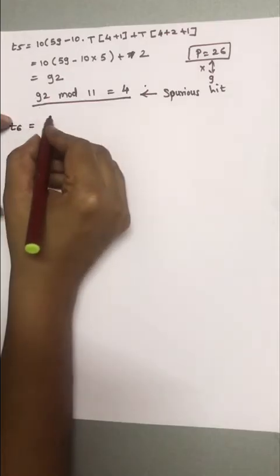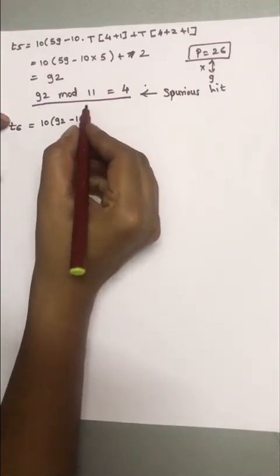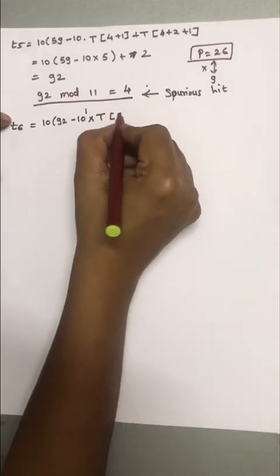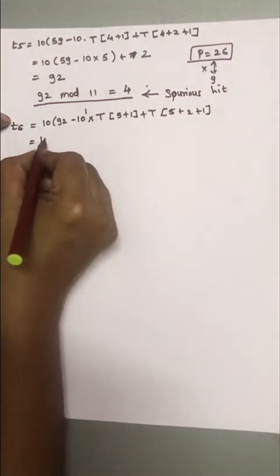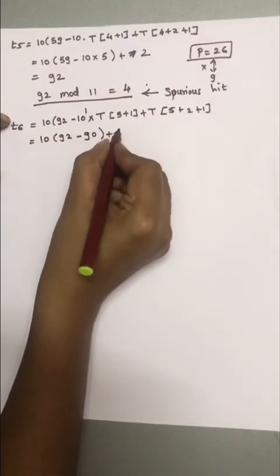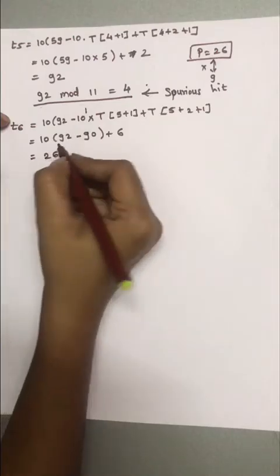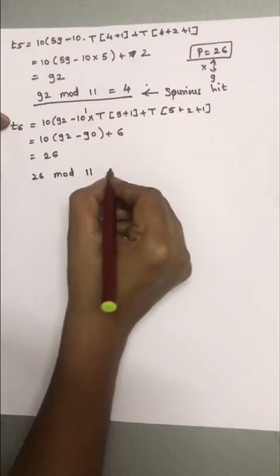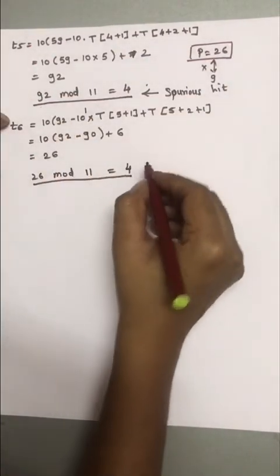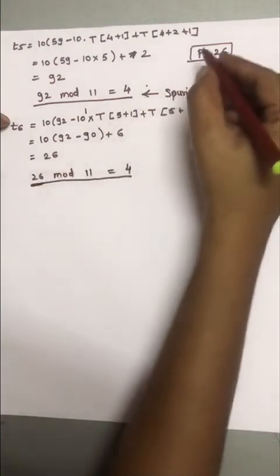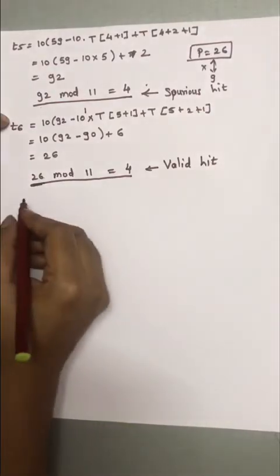For T6, using T(s) = 92: T6 = 10 * (92 - 10 * T(6)) + T(8) = 10 * (92 - 10*2) + 6 = 10 * (92 - 20 + 6) ... simplifying: 10*2 + 6 = 26. Then 26 mod 11 = 4. The hash matches, and checking the actual string: 2 matches 2 and 6 matches 6. So at this point we have found a valid hit.